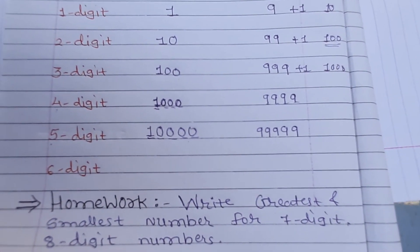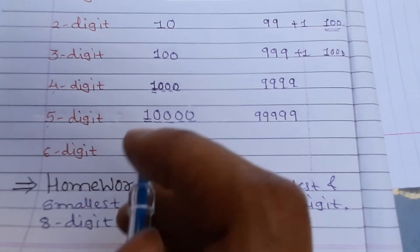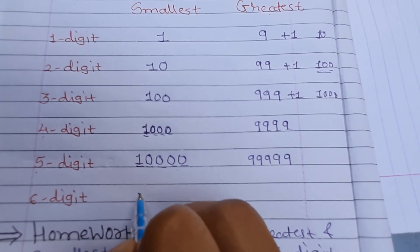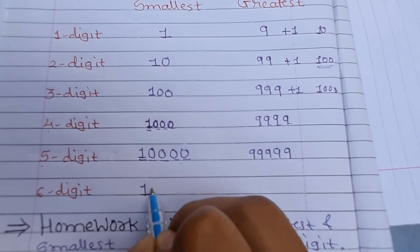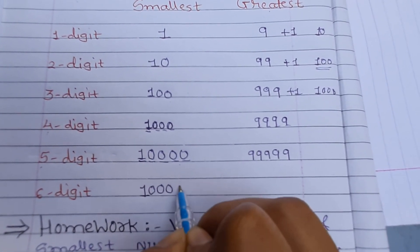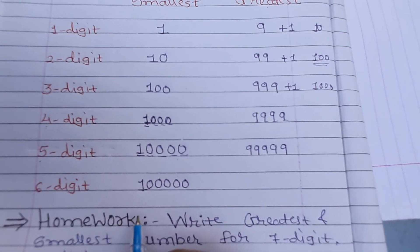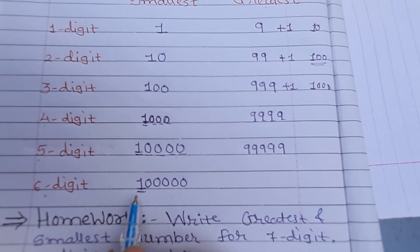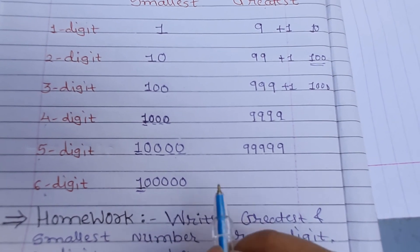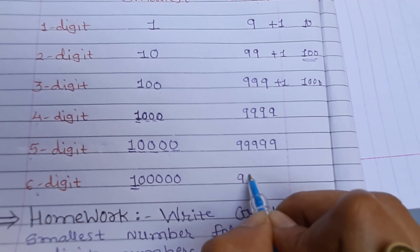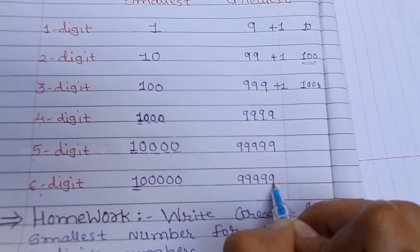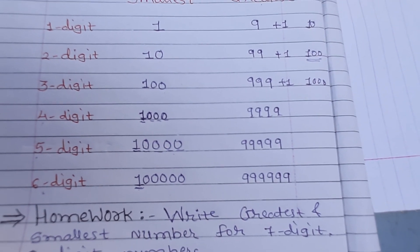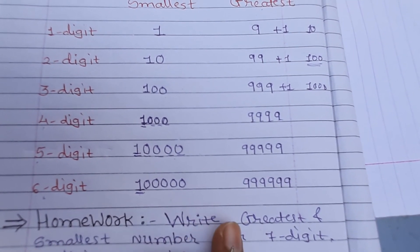Similarly for the 6-digit number: the smallest number starts with 1 followed by five zeros, giving 100000. For the greatest 6-digit number, I write 9 six times: 9 9 9 9 9 9, giving 999999.